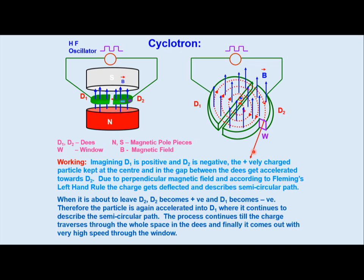When it is about to leave D2, D2 becomes positive and D1 becomes negative, so it suddenly attracts towards D1. When D1 becomes positive and D2 becomes negative, it again increases its velocity and rushes towards D2. The same process happens each time, describing a semicircular path. The process continues till the charge traverses through the whole space within the D's and finally it comes out with very high speed through the window.